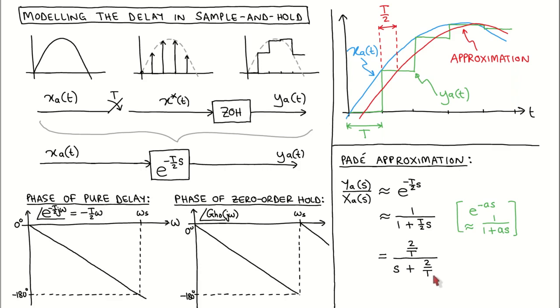We therefore model the delay introduced by sampling and zero-order hold as a pole at minus 2 over t. When the sampling frequency is high, this pole will be far from the origin of the s-plane, and it will not have a significant effect on the dynamics of the full system. However, when the sampling frequency decreases, this pole moves closer to the origin, and its influence on the full system will increase.